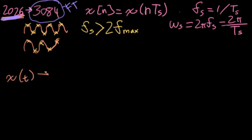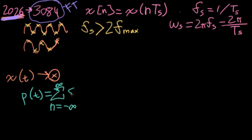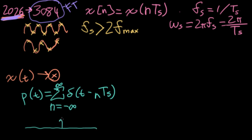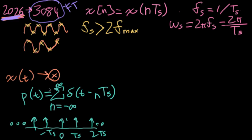Suppose we have our signal x of t and we multiply it by an impulse train. The impulse train will be defined as a sum going from minus infinity to infinity of delta functions, each landing at an integer multiple of our sample period. So we'll write this as p of t, and it will look a little something like this — we'll have a series of unit impulses here at zero, TS, 2TS, minus TS, and so on, infinitely in either direction.